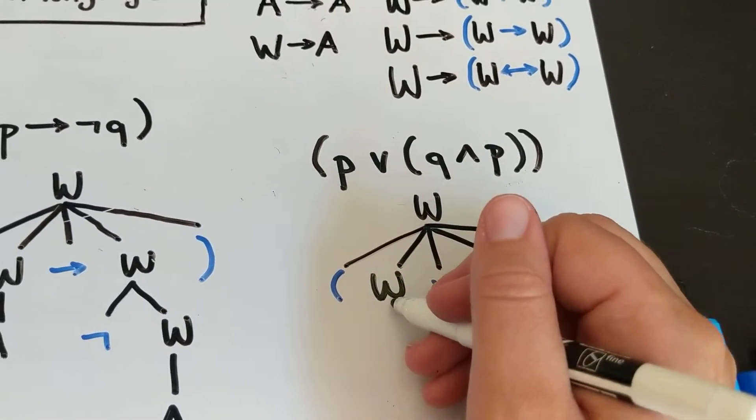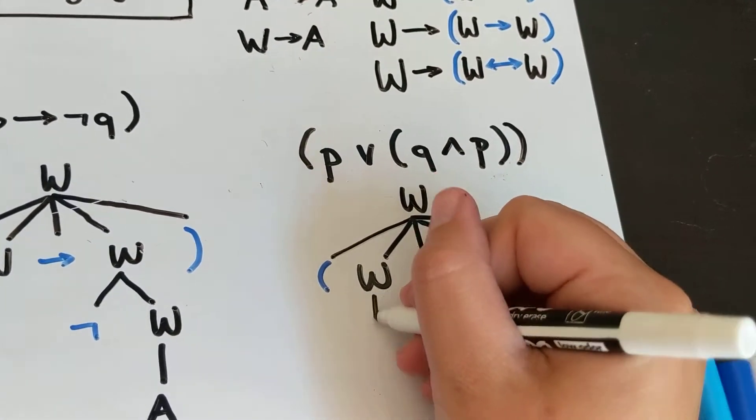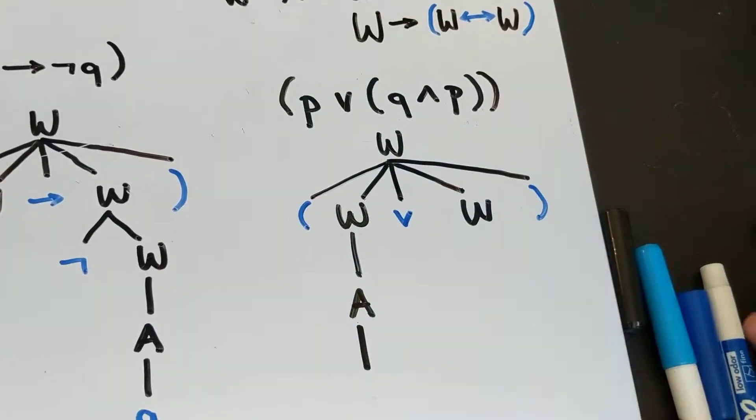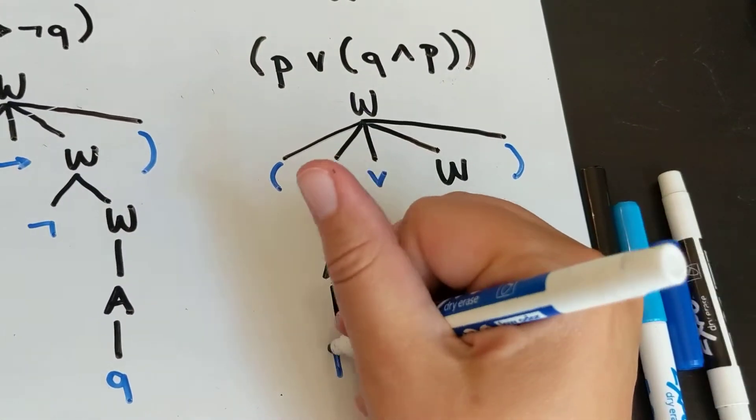This doesn't need to be broken down. This does still need to be broken down. We can break that down into an A, and we can break that down into a P.